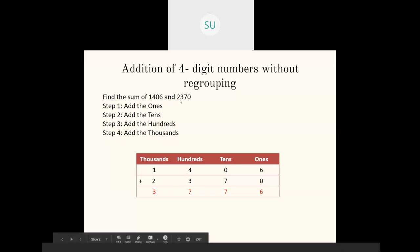So we have 1406 and 2370 here. First you'll write 1406 in their places: six is in ones place, zero in tens, four in hundreds, and one in thousands place. Then 2370: zero in ones place, seven in tens place, three in hundreds place, and two in thousands place. Then we start the addition. The first step is to add the digits in ones place. So in ones place I have six and zero. Six plus zero will be six, so I'll write six under the ones column.